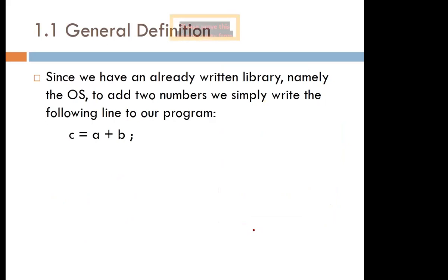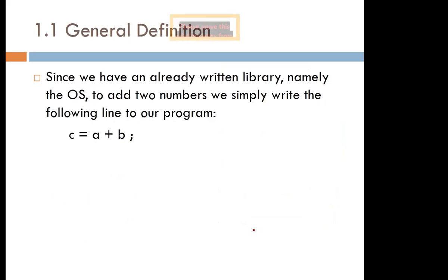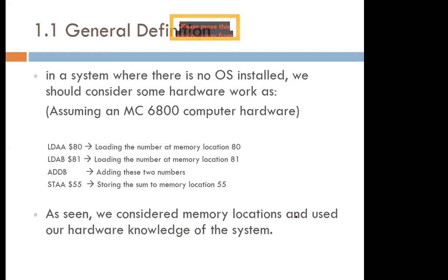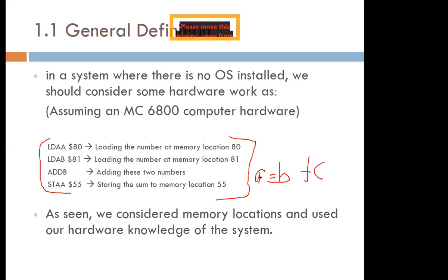For example, if you write a program saying C = A + B, there is a written program that allows you to just say C = A + B and get the answer. But if there were no operating system, you would have to know the language that the microprocessor of that machine uses — the machine code — and write everything in machine code just to add two numbers.